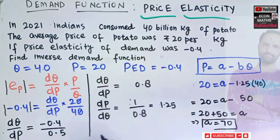Then our demand function is simply, so our demand function will be equal to, that is P will be equal to, the value of A is 70, minus, and slope is 1.25 for Q. This will be our inverse demand function.